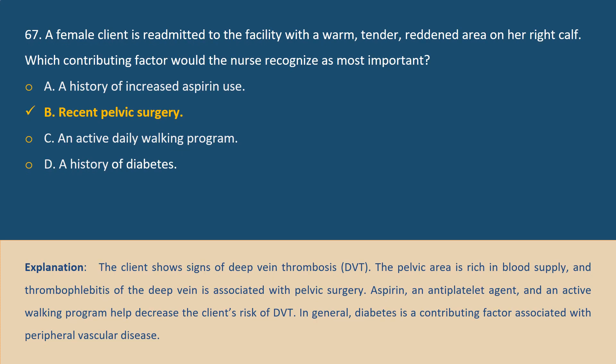Answer B. The client shows signs of deep vein thrombosis (DVT). The pelvic area is rich in blood supply, and thrombophlebitis of the deep vein is associated with pelvic surgery. Aspirin, an anti-platelet agent, and an active walking program help decrease the client's risk of DVT. In general, diabetes is a contributing factor associated with peripheral vascular disease.